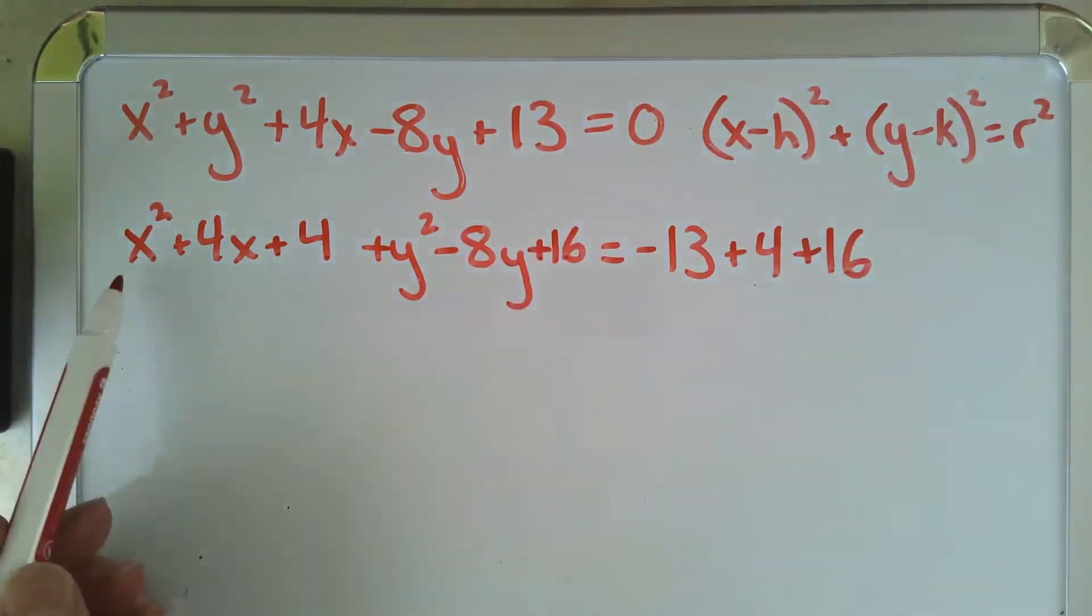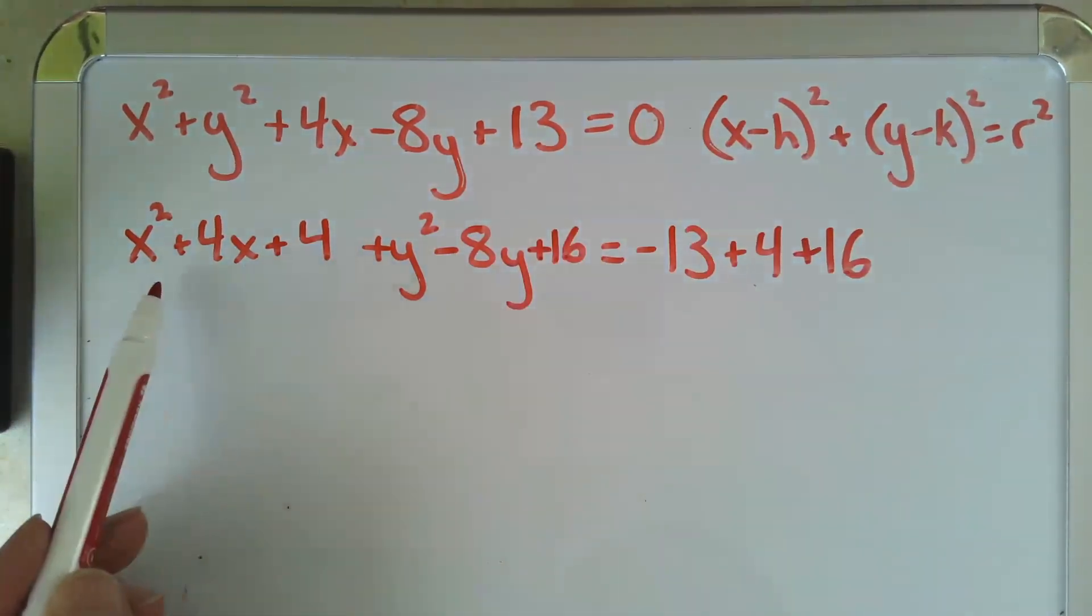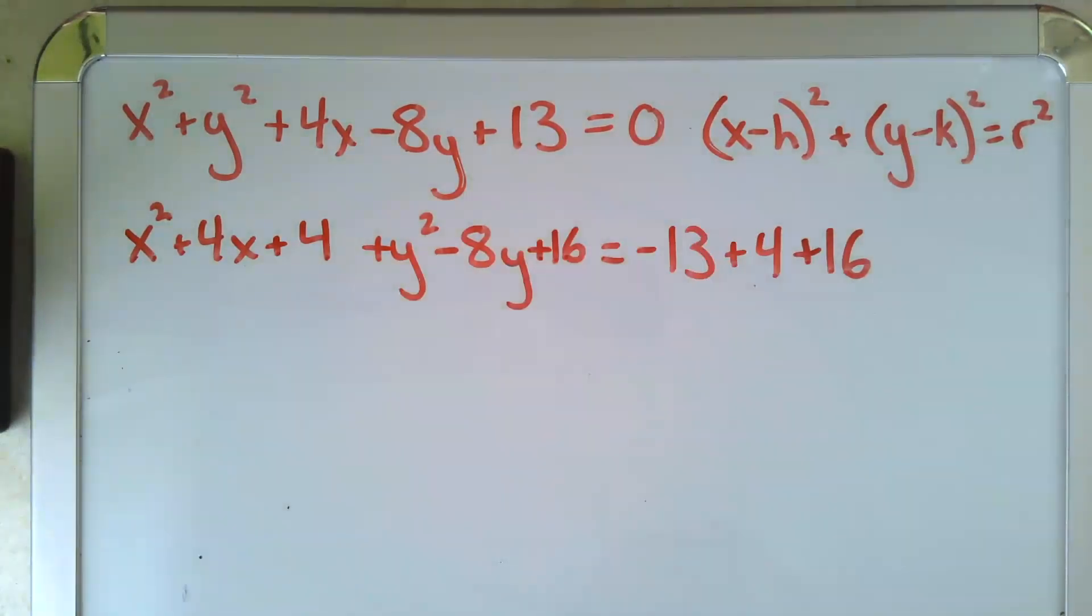Next step. We want to take this perfect square we created and write it in that form. So that looks like this. And now we do the same with our y equation. We created a perfect square.